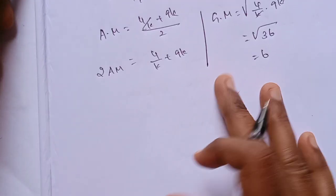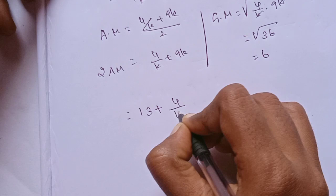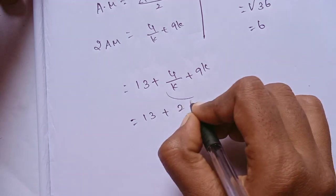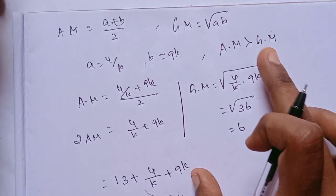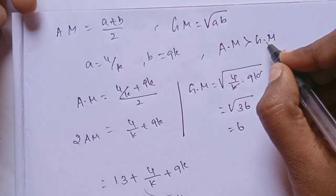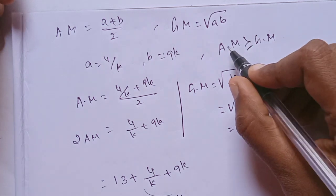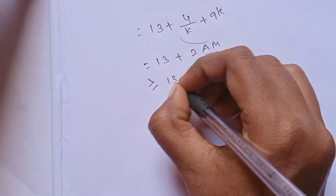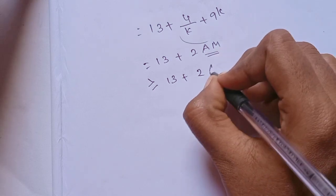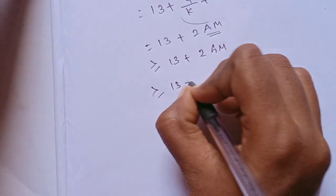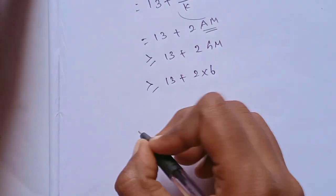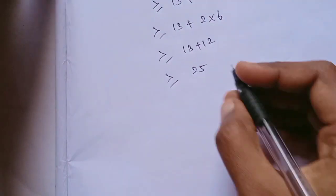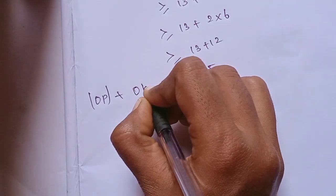Substitute: 13 + 2AM. Actually, AM is equal to GM when the terms are equal. AM ≥ GM, so 13 + 2AM ≥ 13 + 2(6) = 13 + 12 = 25. Therefore, the minimum value is 25.